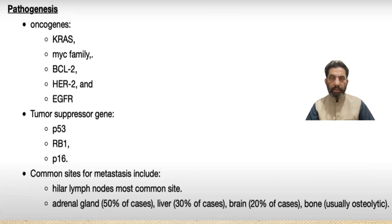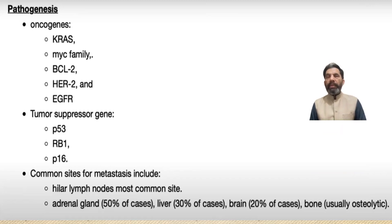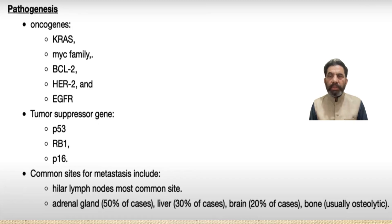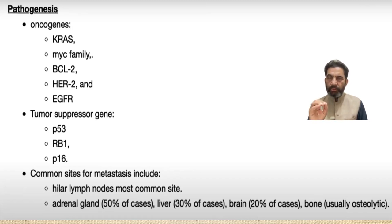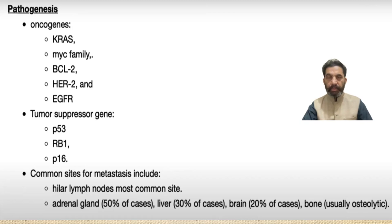The commonest site of metastasis of lung tumour is usually the hilar region, and then adrenals, liver, brain, and bones. When classifying tumours of the lungs: primary tumours and secondary tumours. Primary tumours arise from the cells or the tissue of the lungs, while secondary tumours are metastasising tumours which can come from any site, especially breast tumours and bone tumours, which can rapidly spread to the lungs.